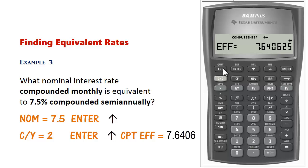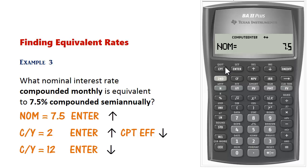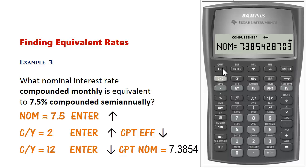But we want the monthly compounding rate. So scroll back down and change CY to 12, press Enter, scroll down again, and compute nominal. So 7.5% compounded semiannually is equivalent to 7.3854% compounded monthly.